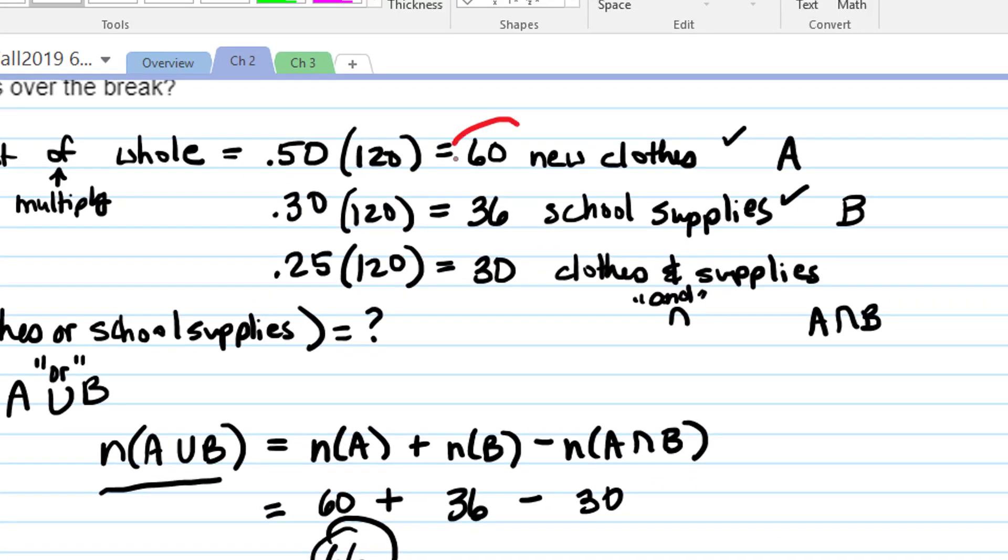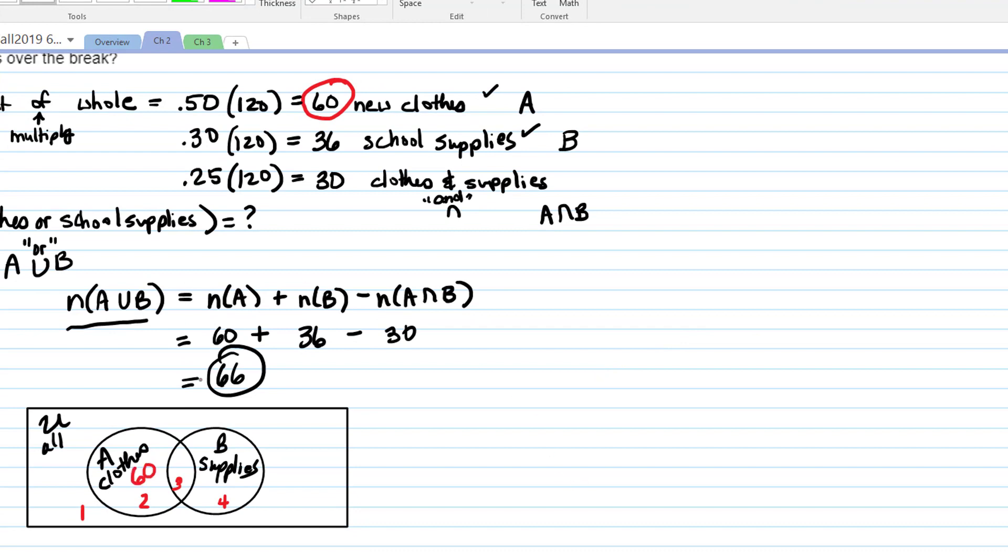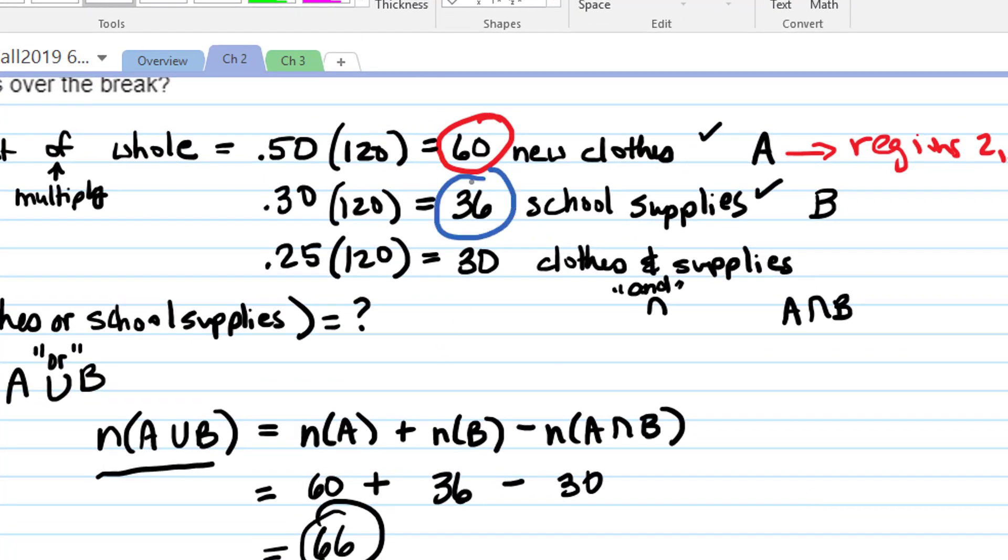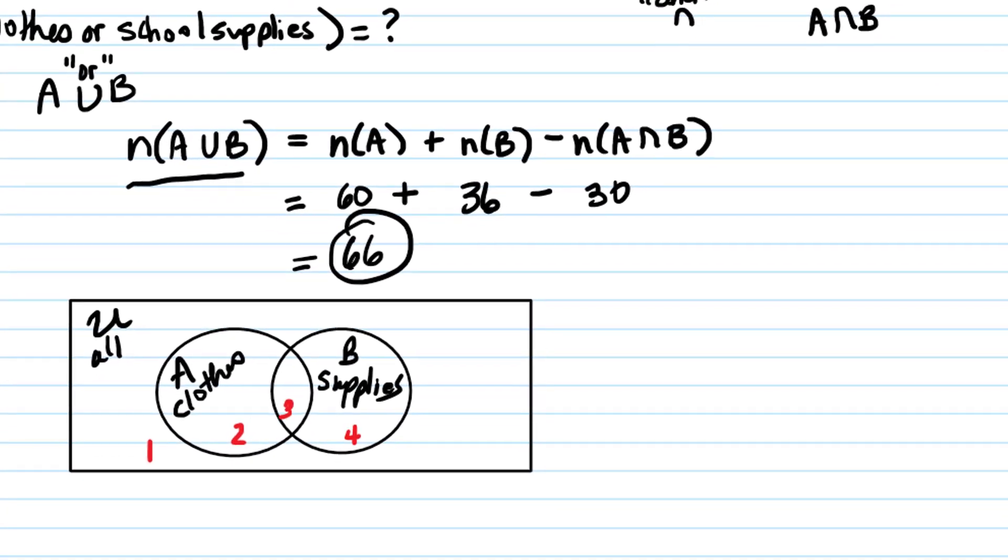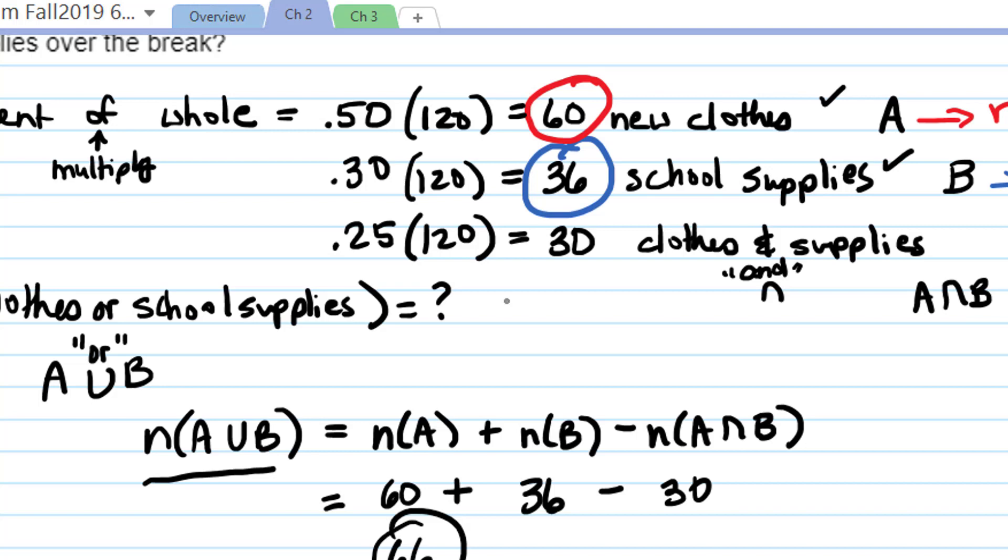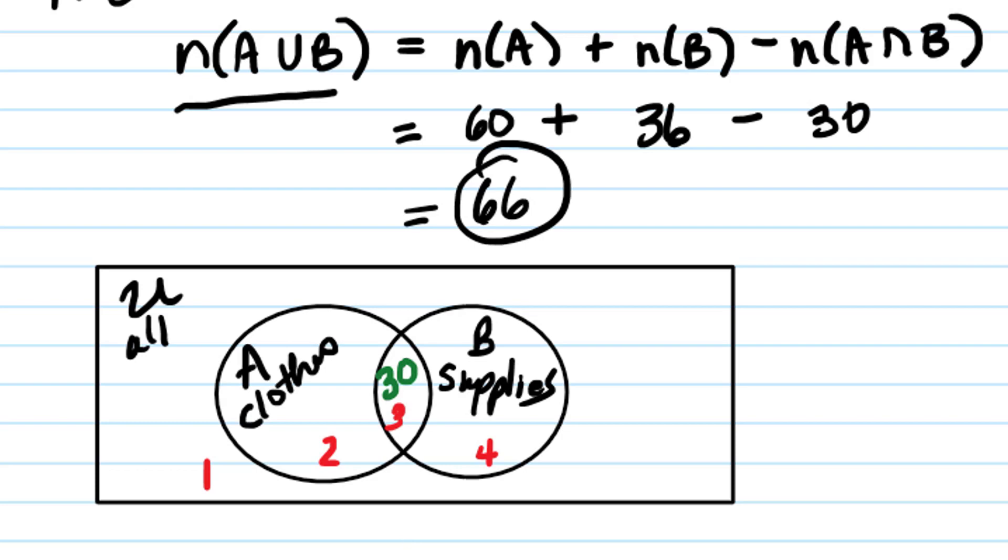You tell me this number 60 is describing how many students fall into which region of the Venn diagram. 2 and 3. That's right. Everybody in regions 2 and 3 got new clothes, didn't they? And all we know about these people is they're all the people who got new clothes. So this is actually just going to be a combination of regions 2 and 3. And then what about 36? Describe for me where 36 goes. 3 and 4. That's right. So either of regions 3 and 4 are a combination of those. Now describe for me this number 30. Where does that go? That's just in region 3. We know that because it's everybody who's in both, the overlap. So that one we actually can put right here on the Venn diagram. 30.